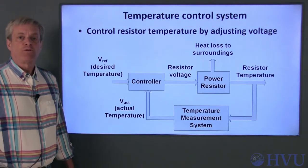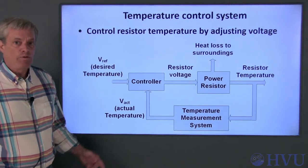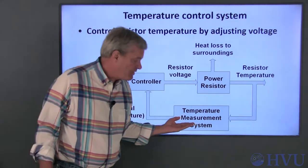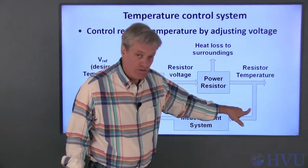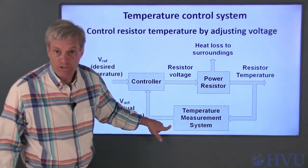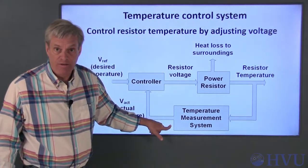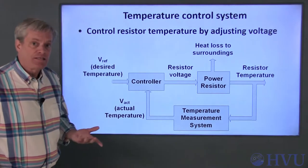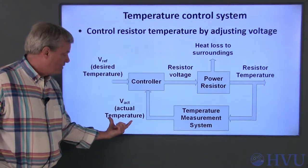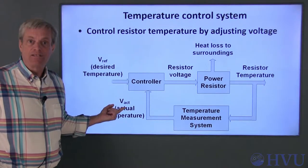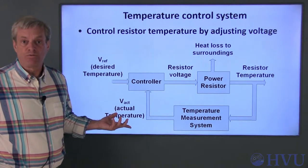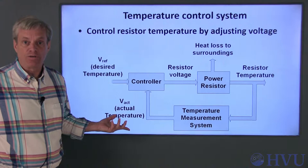In order to perform closed loop control, we need to measure the actual temperature of the resistor using a temperature measurement system. This system will output a voltage, VACT, that is proportional to the resistor's temperature.